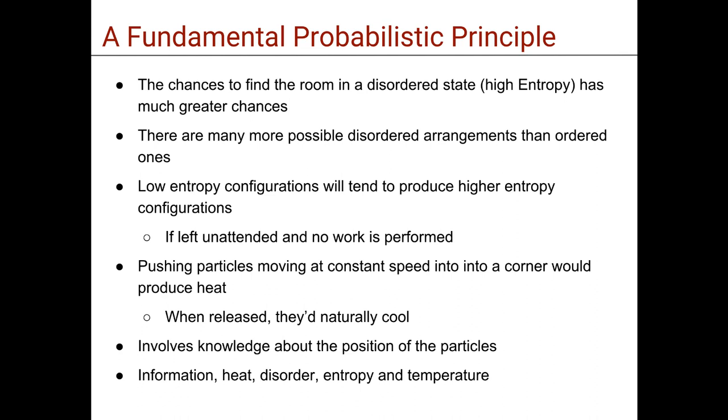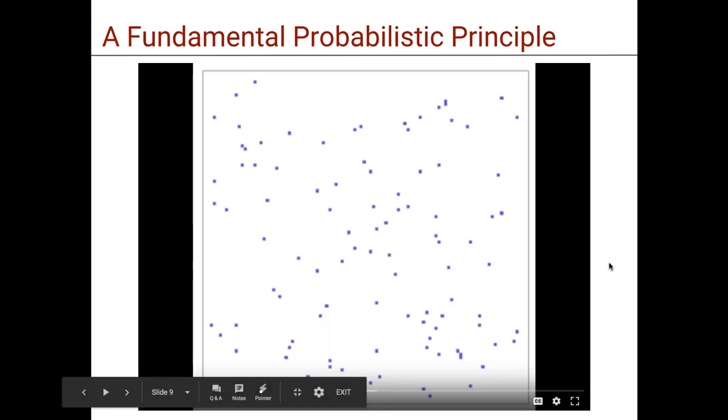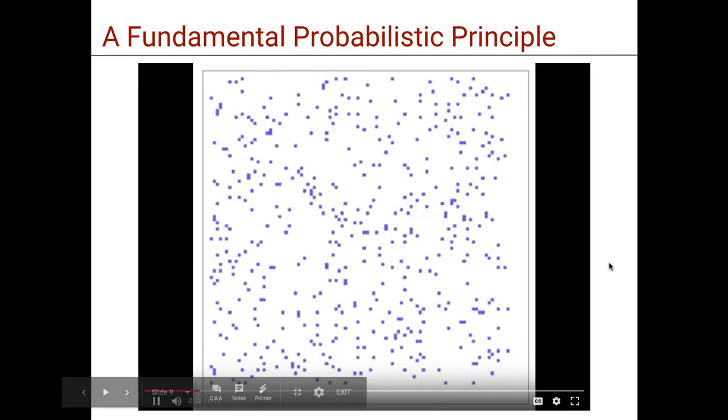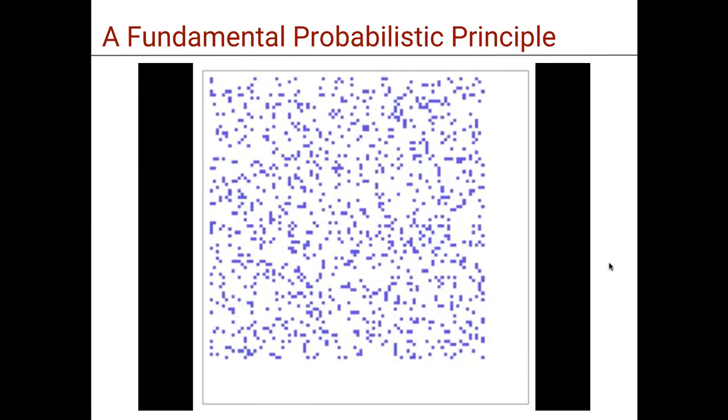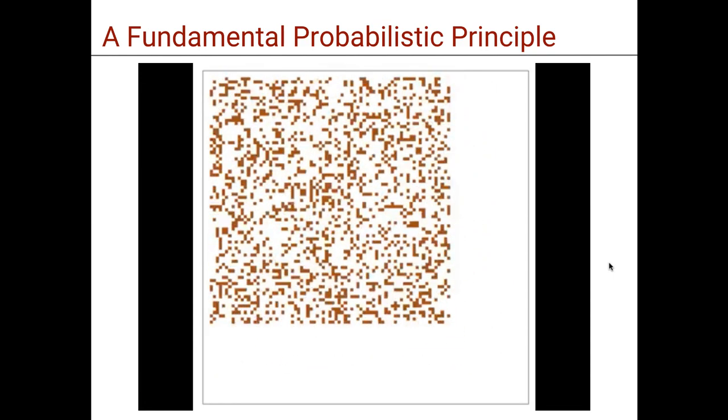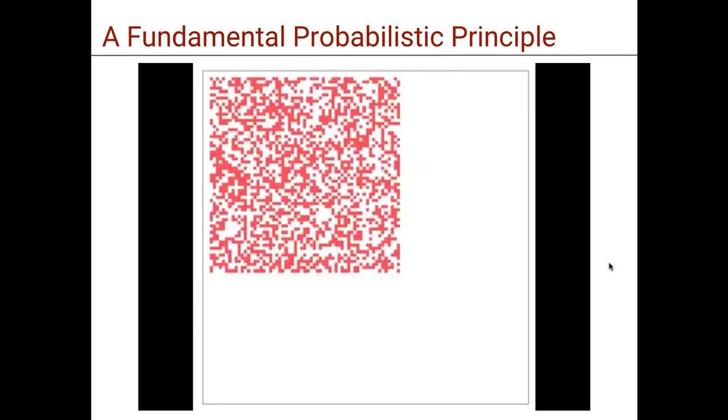Moreover, if the particles were moving at constant speed, by pushing them into a corner they would bounce each other with higher frequency, producing heat that when released would naturally cool down, hence establishing a strong connection with heat and temperature.